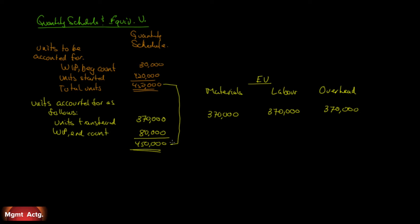We have the 80,000 units, but we have to put them in terms of equivalent units for material, labor, and overhead. Materials are 50% complete. So if we have 80,000 units partially completed and 50% of them are complete per materials, that means 40,000 are 100% complete in terms of materials. Because they're only 50% done in terms of materials, that means 40,000 equivalent units done in materials.